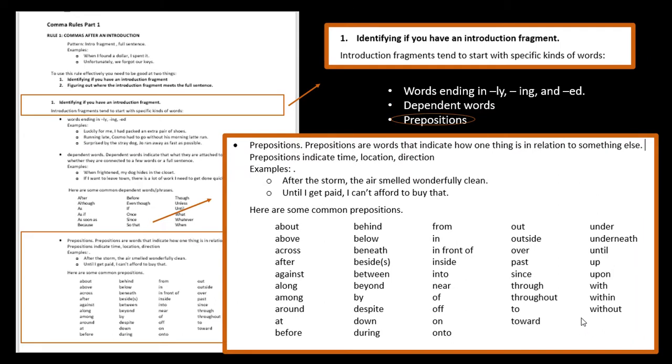All right prepositions. Prepositions are words that indicate how one thing is in relation to something else. So it indicates how it is in relation to something else in relation to time, location, direction. So here are some examples. After the storm, the air smelled wonderfully clean. So after is a preposition. And so we know that we have an introduction fragment. The second one, until I get paid, I can't afford to buy that. Until is a preposition. So we know to watch for it.